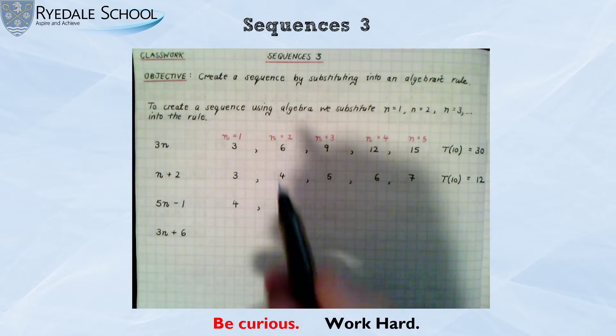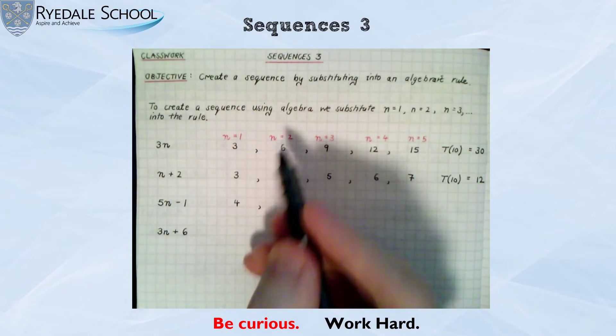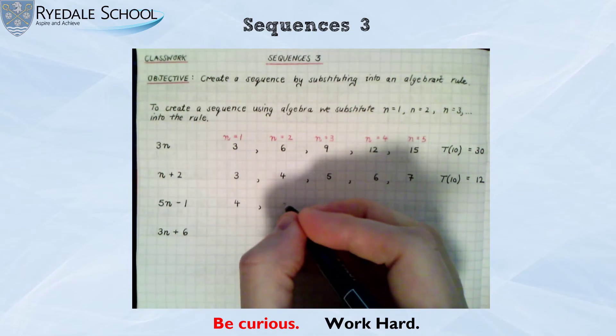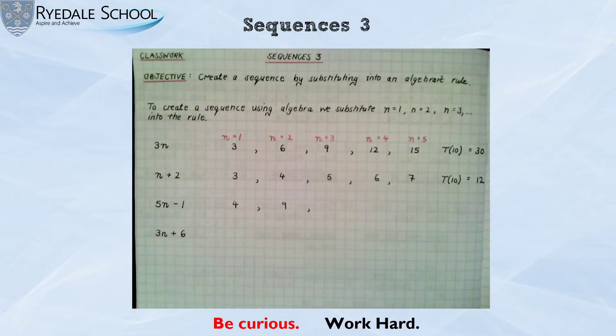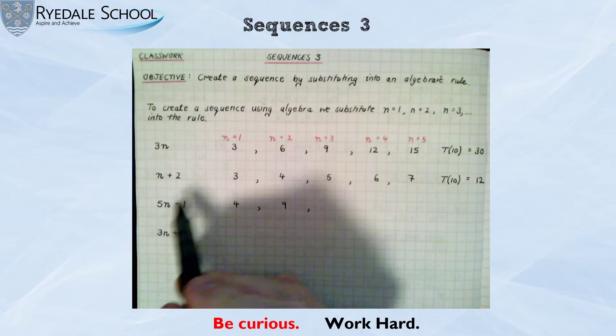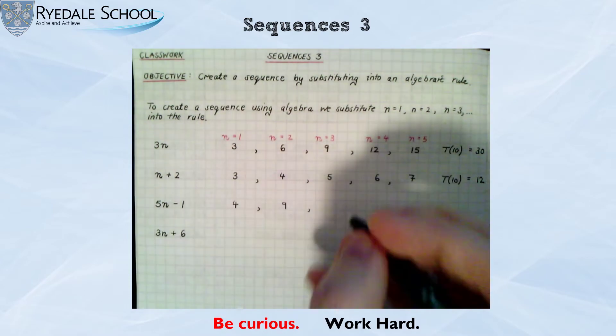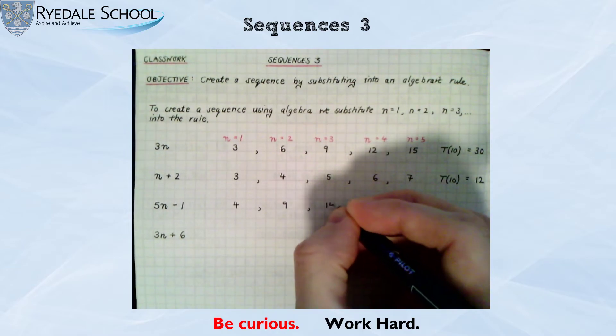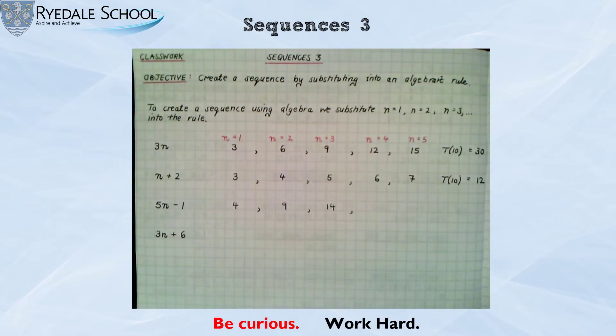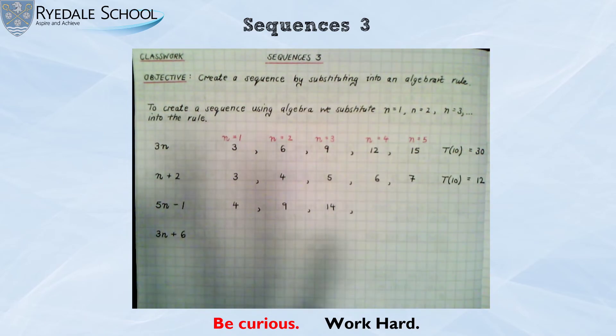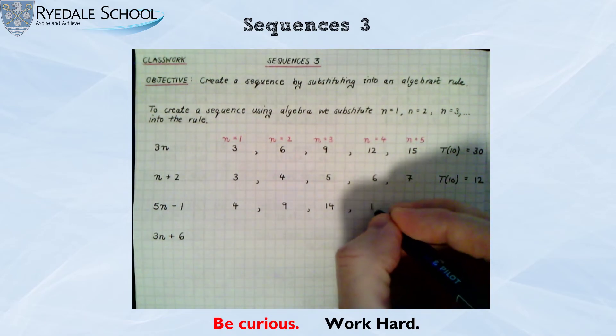Let's do it for the second term when n is 2. 5 times my number is 10. Take away 1 is 9. Third number, 5 times 3, 15, take away 1, 14. Fourth number when n is 4, 5 times 4, 20, take away 1, 19.